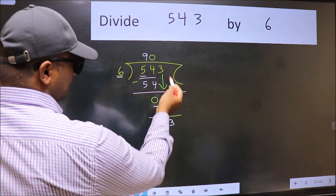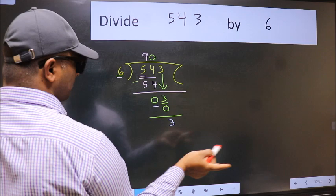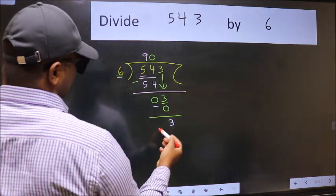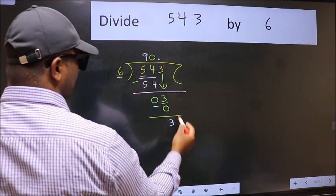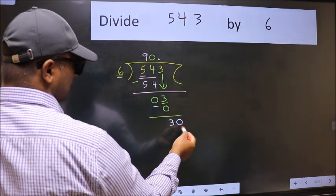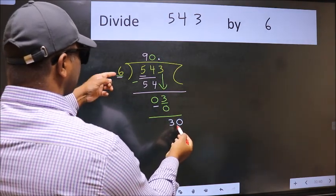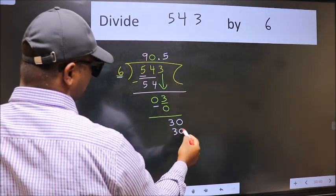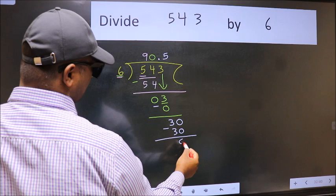Over here, we did not bring any number down. And 3 is smaller than 6. So now we can put dot and take 0. So 30. When do we get 30 in 6 table? 6 fives is 30. Now we subtract. We get 0.